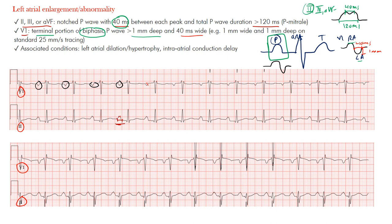Below we have another patient. Here's lead V1. In V1 we're looking for the criteria: one wide and one deep. Look for one millimeter wide and one millimeter deep. Here are perfect examples — look at how wide and deep these P waves are, especially that terminal portion, which is the negative portion here. A few millimeters wide and deep. These are excellent examples of those P waves, and there is some notching in these as well. This patient did have severe left atrial enlargement.